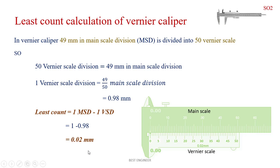Least count is the least amount that can be measured by using the instrument — that is called least count. By using this vernier caliper, we can measure the lowest amount of 0.02 mm, and that is called least count.